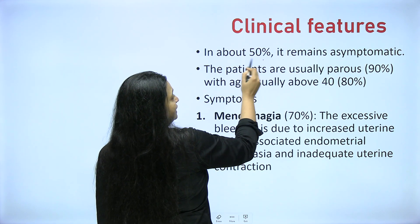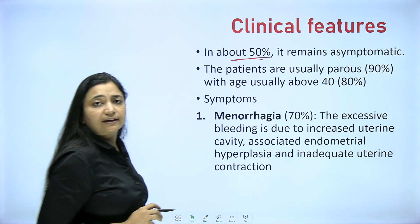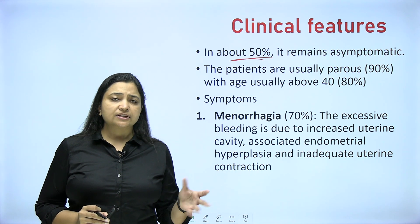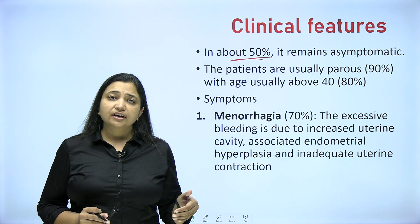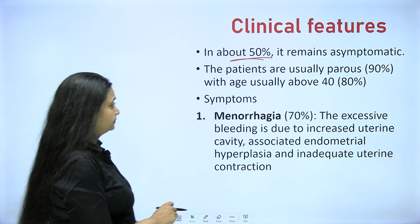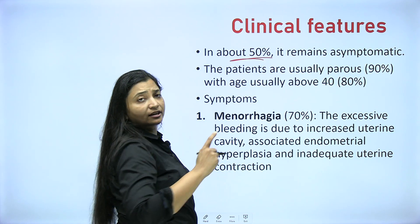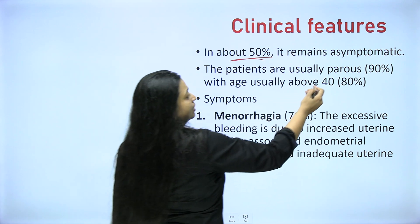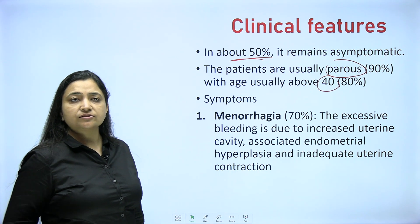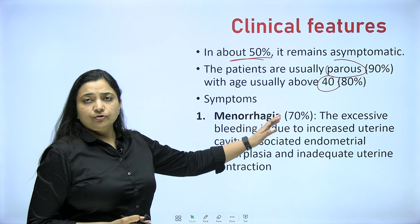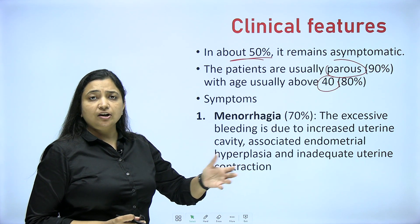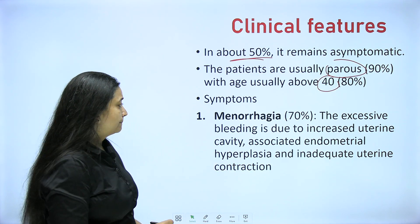In about 50% of cases it remains asymptomatic — if it is a small deposit or only the basal layer, most females show no symptoms. But if the functional layer is present and there are large deposits, then adenomyosis becomes problematic. For clinical features and history, first of all we look at parity and age. The patient is generally in her 40s, and in the obstetric history you will find she has given birth to multiple children or had multiple DNCs.